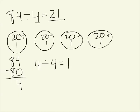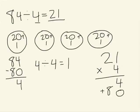Now how can I check my division? I'll use the inverse operation of multiplication. And over here I'll take 21 times 4. And 4 times 1 is 4, 4 times 20 is 80. And when I add those partial products, of course, I get 84.